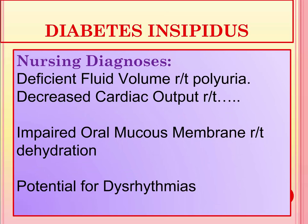Common nursing diagnoses applicable for this client include deficient fluid volume related to polyuria, decreased cardiac output related to dehydration, and impaired oral mucous membranes related to dehydration. These clients will also be at risk for hypokalemia or low potassium due to excessive urination, creating a potential for dysrhythmias. They are also at risk for sodium imbalance — with so much solute and very little solution in the vascular space, they could develop hypernatremia greater than 145.